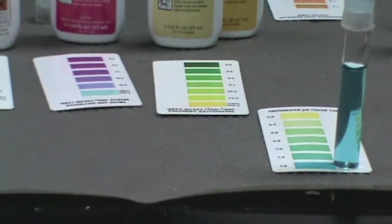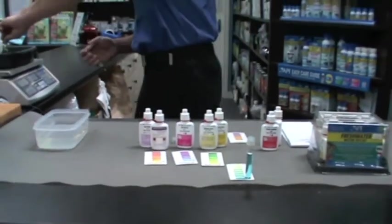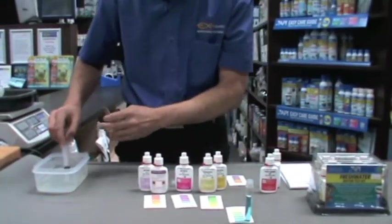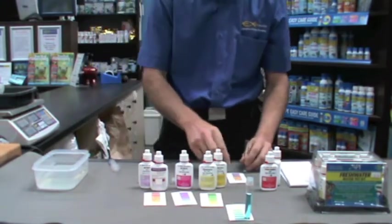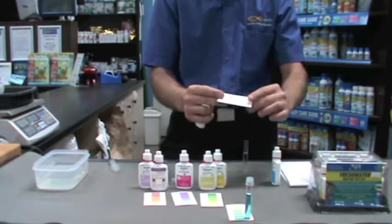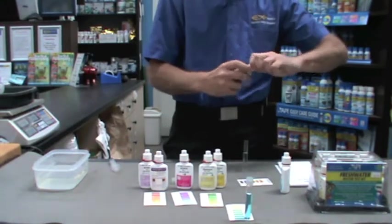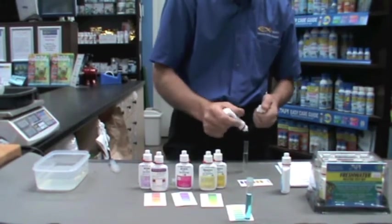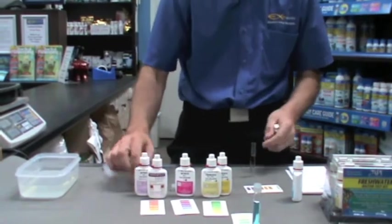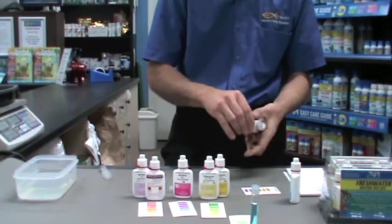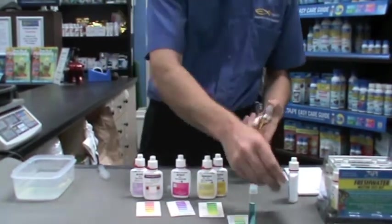Once again we rinse our vial with water from the aquarium, then fill it with 5 milliliters. With the high range pH test kit, instructions are on the back. This time we're adding five drops of test solution. Put our cap on, shake the vial, and read the pH.